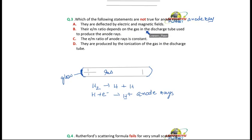Their E by M ratio depends on the gas in the discharge tube used to produce the anode rays. Right. This is because the anode rays consist of positively charged particles. If it's a hydrogen gas, the positively charged particles would be H+. If it's nitrogen gas, it would be N3+. So the charge to mass ratio will depend on the gas in the discharge tube.